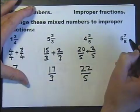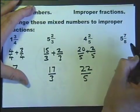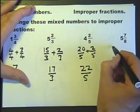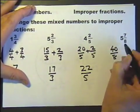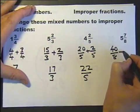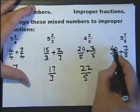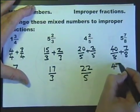And the last one. 5 and 7 eighths. How many eighths are there in the 5? Well if we go 5 eights are 40, that's how many eighths there are in the 5. And the 7 eighths, giving us a total of 47 eighths.